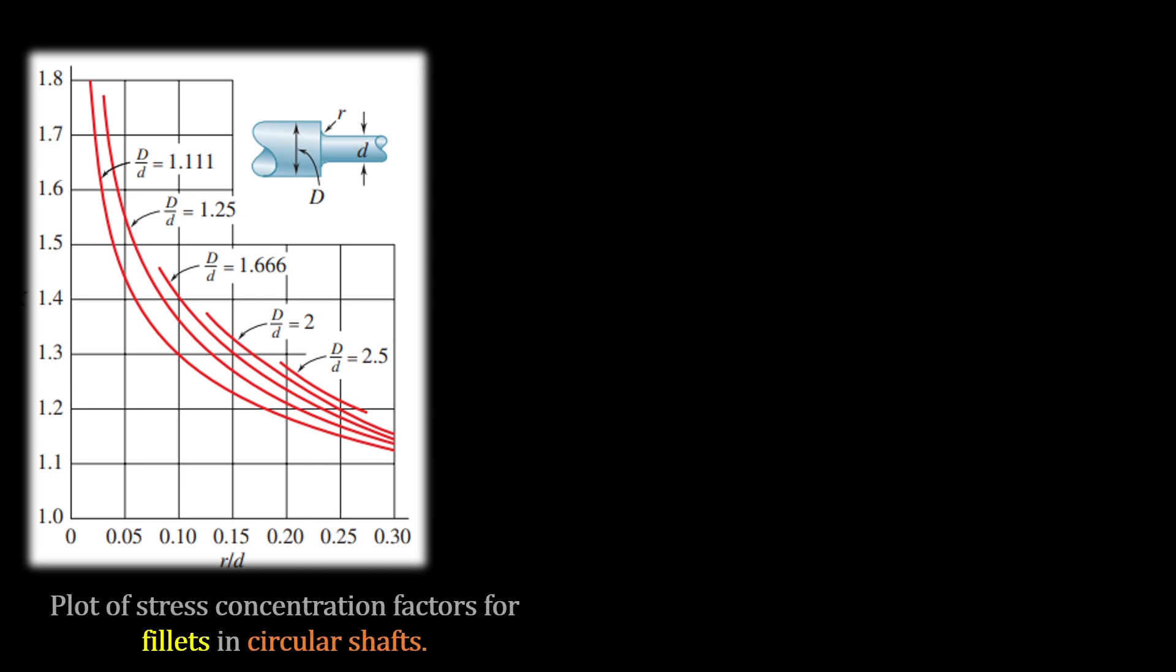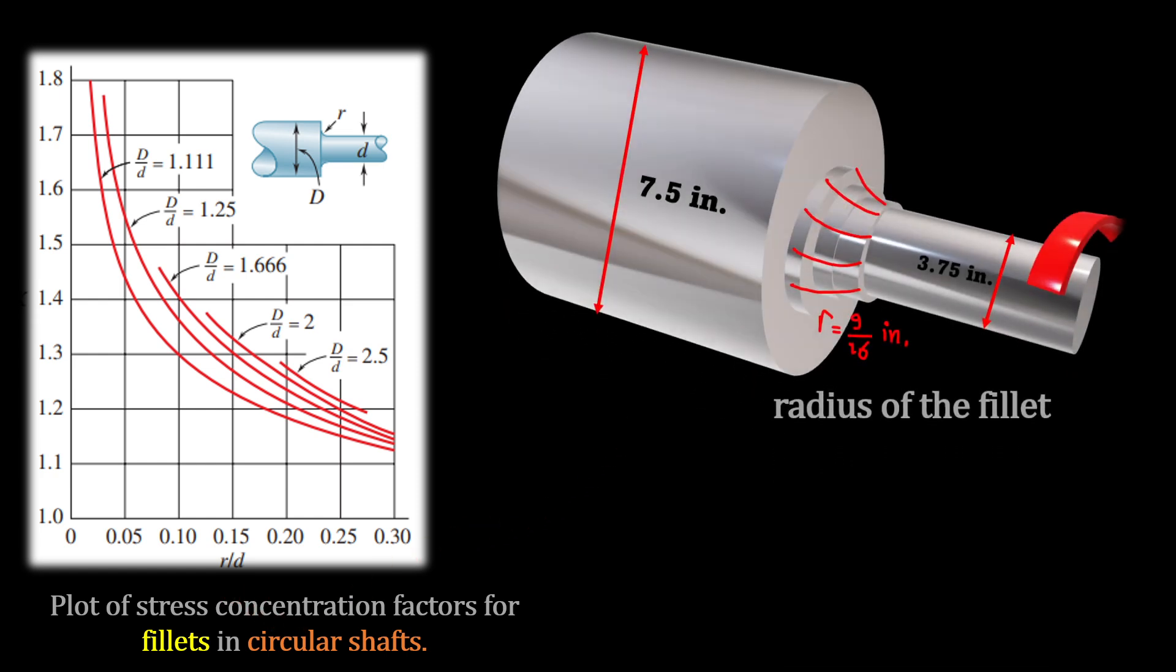We need to jump to the plot of stress concentration factor for the fillet in circular shaft. The larger diameter is capital D, 7.5 inches, which is here. And the smaller diameter shaft is 3.75 inches. Capital D is 7.5 inches, and d is 3.75 inches.